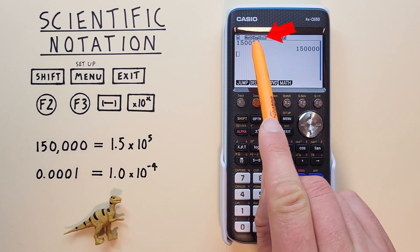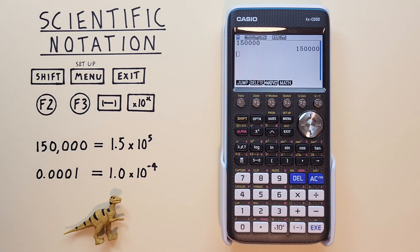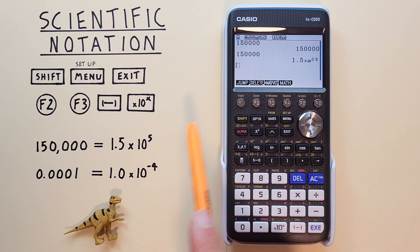Now we see SCI 2 at the top of our screen, letting us know we're in scientific notation mode with two visible digits. Now if we enter 150,000 and hit EXE, it displays in scientific notation mode, or 1.5 times 10 to the power of 5.